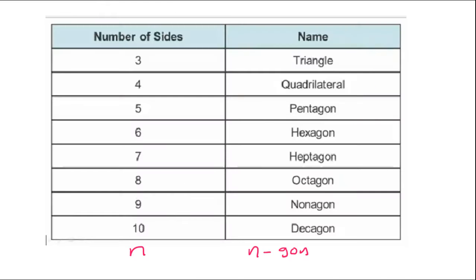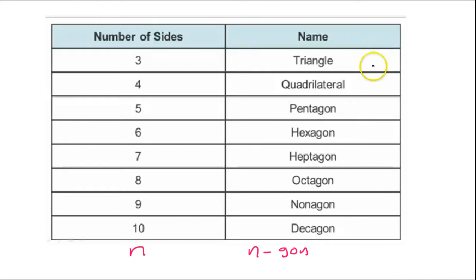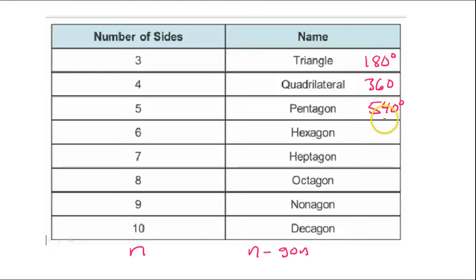Let's make a list. For a triangle: 180 degrees. Quadrilateral: 360 degrees. Pentagon: 540 degrees.